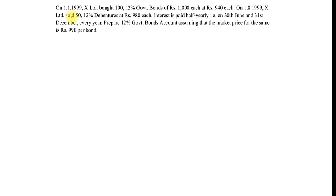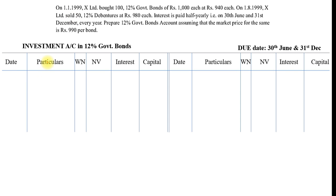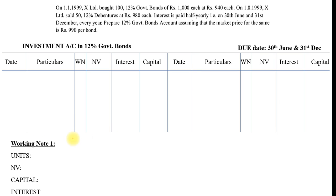Prepare 12% government bond account, assuming that the market price for the same is Rs. 990 per bond. Now what we do here is firstly note down the format: Investment Account in 12% Government Bond. Due dates are 30th June and 31st December — these are the two dates on which interest can be paid. We will always start in chronological order. On 1st January 1999, they bought — the moment you buy, it is debit; the moment you sell, it will be credit.